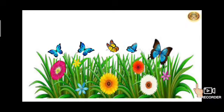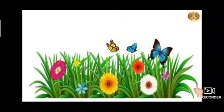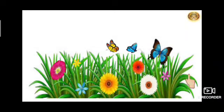What happened children now? 2 butterflies flew away. Now, how many butterflies are left? Again let's count: 1, 2, 3. Now only 3 butterflies are left. So what happened children? The number of butterflies became less. Means, what did we do here? Subtraction.